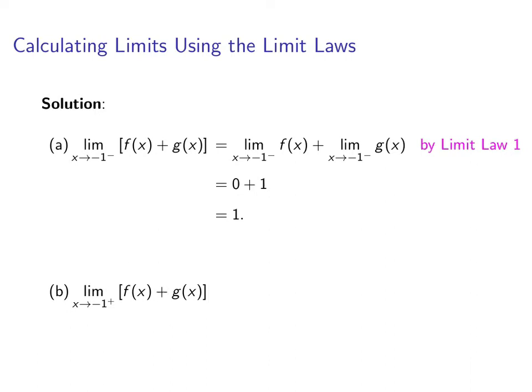Now if we go from the right, we can still break it up into two separate limits, but this time we get different values. The limit as x approaches negative one from the right of f(x) is now two. We add these up and get three.